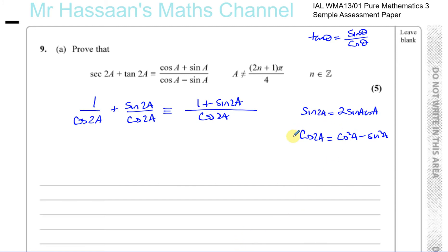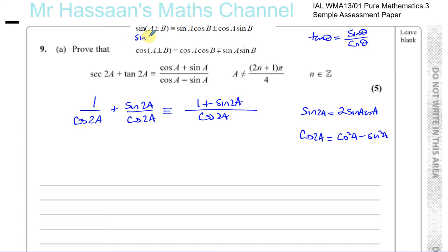In your formula sheet for P3 you'll find the compound angle identities, from which you can derive both of these. For sin2A, write sin(A+A): that gives sinA cosA plus cosA sinA, which is 2sinA cosA. For cos2A, write cos(A+A): that gives cos²A minus sin²A. So that's how you can derive these two from the formula sheet if you forget them.